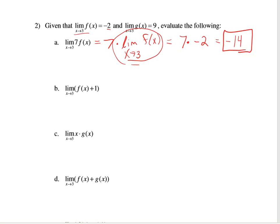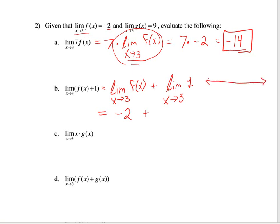For part b, the limit of f(x) + 1 as x approaches 3. By the first rule, I can break this up into the limit of f(x) as x approaches 3, plus the limit of 1 as x approaches 3. The limit of f(x) as x approaches 3 is negative 2. What's the limit of 1 as x approaches 3? If you look at the graph of y = 1, it's a constant function — it equals 1 all the time. So the limit of any constant is itself. We get negative 2 + 1 = negative 1.